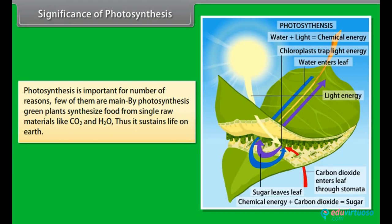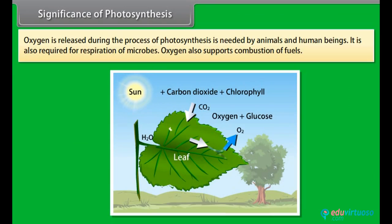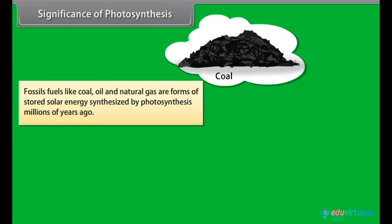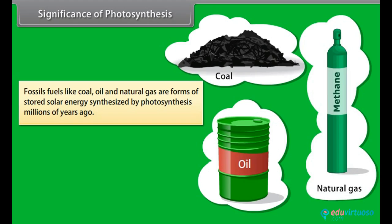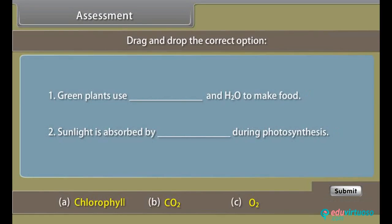Photosynthesis is important for a number of reasons. By photosynthesis, green plants synthesize food from raw materials like CO2 and H2O, thus sustaining life on earth. Oxygen released during photosynthesis is needed by animals, human beings, and microbes for respiration, and also supports combustion of fuels. Fossil fuels like coal, oil, and natural gas are forms of stored solar energy originally synthesized by photosynthesis millions of years ago.